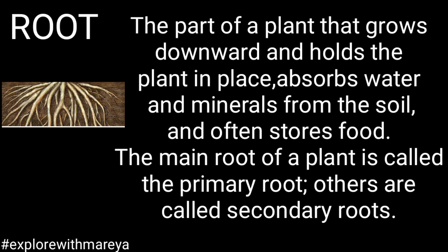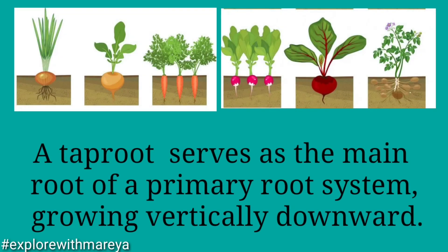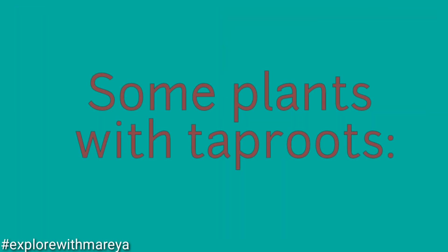Root — the part of a plant that grows downward and holds the plant in place, absorbs the water and minerals from the soil, and often stores food. The main root of a plant is called the primary root; others are called secondary root. A taproot serves as the main root of a primary root system, growing vertically downward.